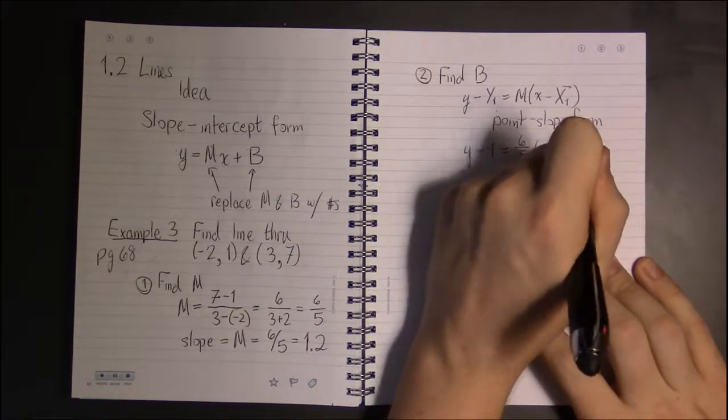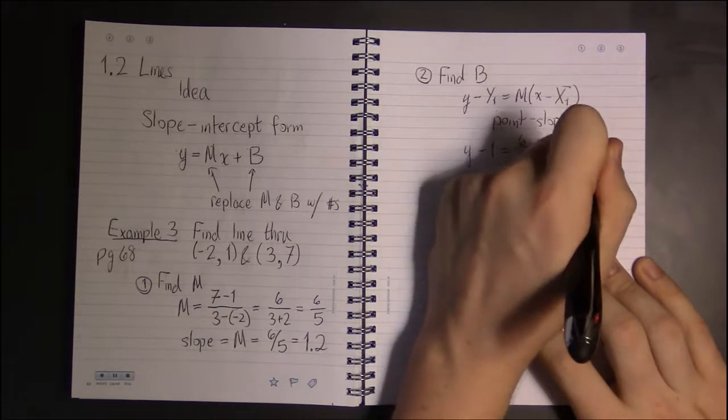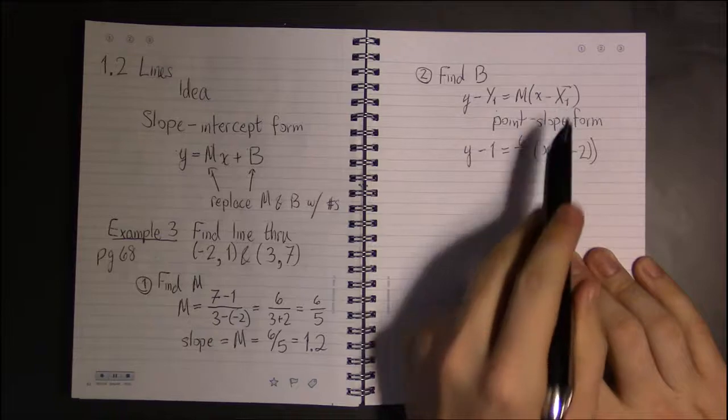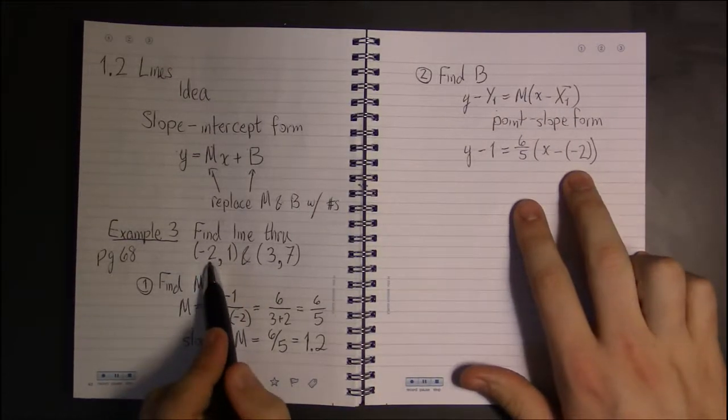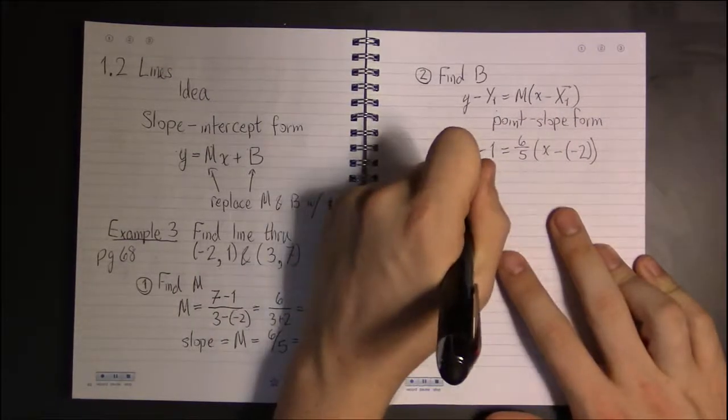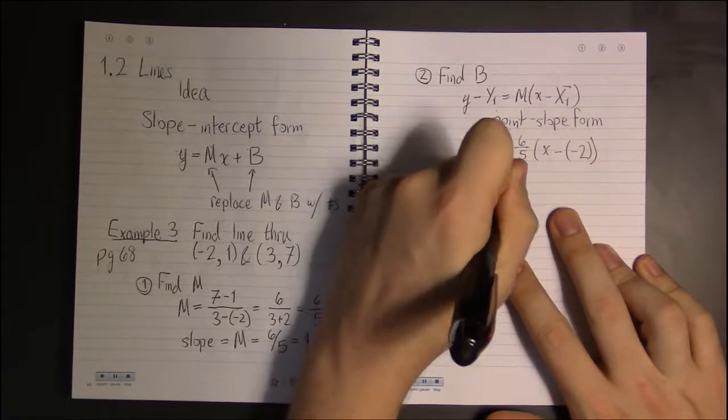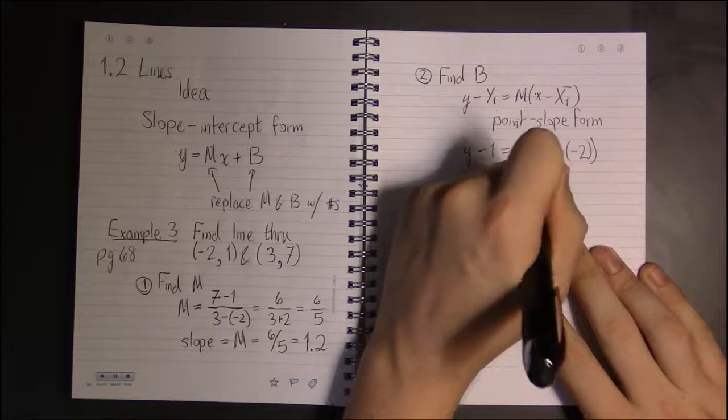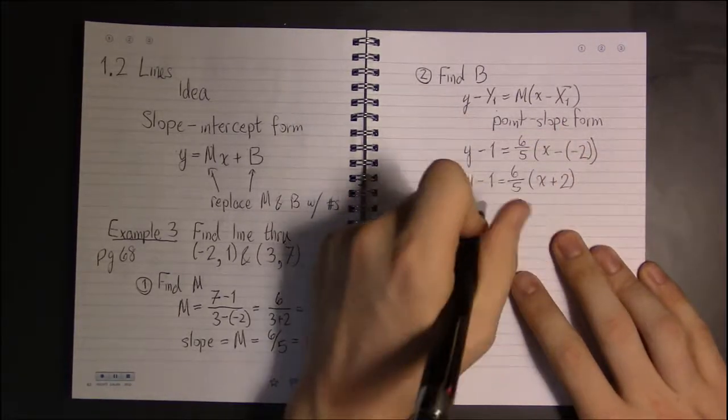So, this is a minus. I still have to keep that minus from x1. Minus from the formula and the minus from x1. So, that becomes y minus 1 is 6/5 times (x + 2). Minus a minus is a plus.